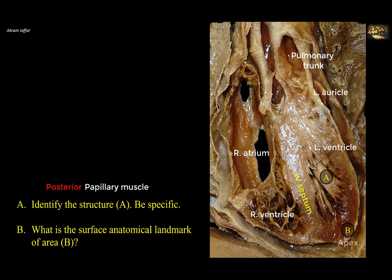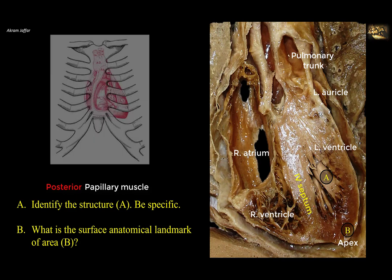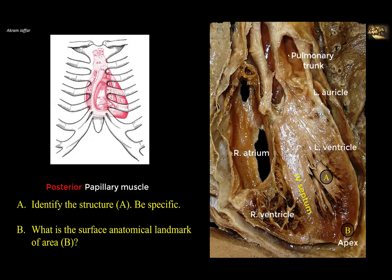Area B forms the apex of the heart — it is clearly part of the left ventricle. Note the thickness of the region and compare it with the remaining parts of the left ventricle. The apex of the heart points inferiorly, to the left, and slightly anteriorly. It is located in the left fifth intercostal space at the mid-clavicular line, and this is the surface anatomical landmark of the apex of the heart. The apex beat can be felt just medial to that point, and in cases of left ventricular hypertrophy, the apex beat would shift more laterally to the left.